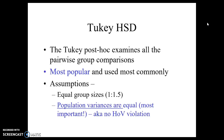Tukey's HSD is the most popular and the most commonly used — this is kind of your go-to. It looks at all pairwise group comparisons. So if we have three groups, it looks at group one and two, group one and three, and groups two and three — all possible combinations. We do need equal group sizes, or at least fairly equal, and our population variance has to be equal. So we have to meet that homogeneity of variance assumption to use Tukey's.